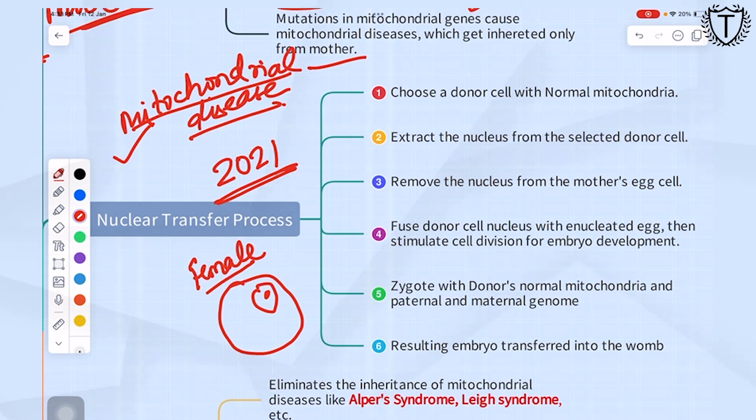We remove the nucleus from this female's egg cell and then put it in the mother's egg cell which we have already enucleated. Now we have a new egg cell which has the mitochondria of the donor and the 23 chromosomes of the mother.